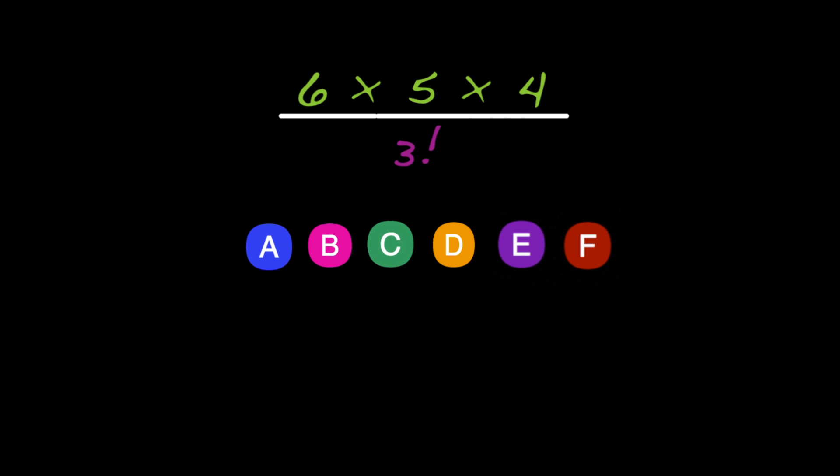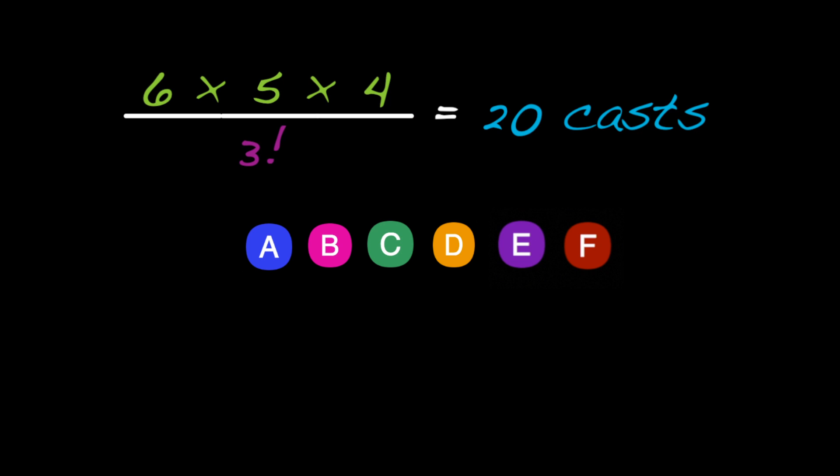leaving 6 times 5 times 4 over 3 factorial, which equals 20. So there are 20 different casts in this case.